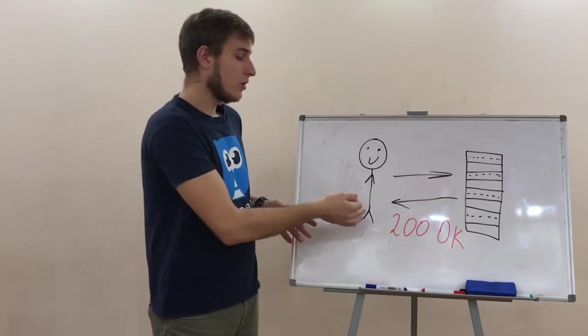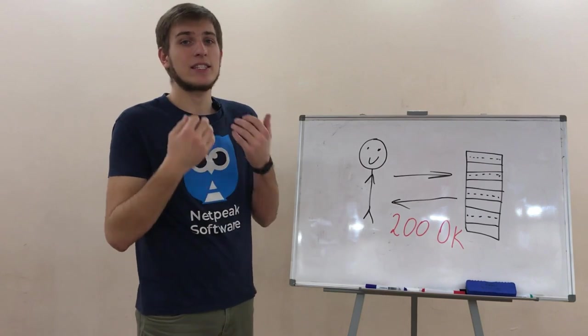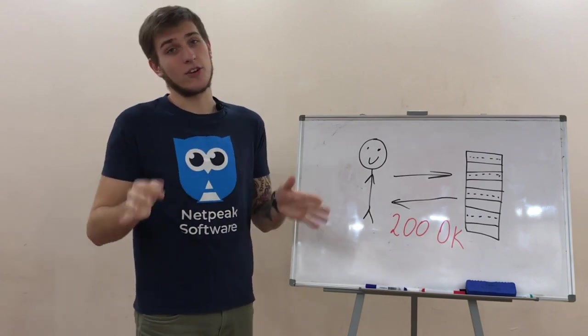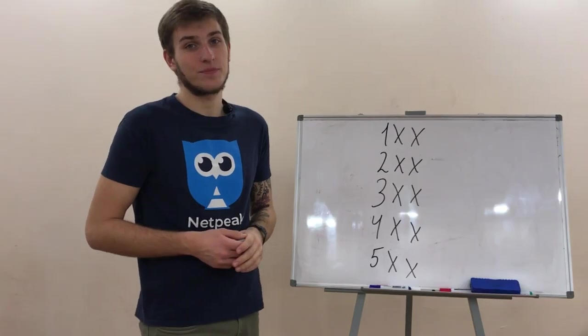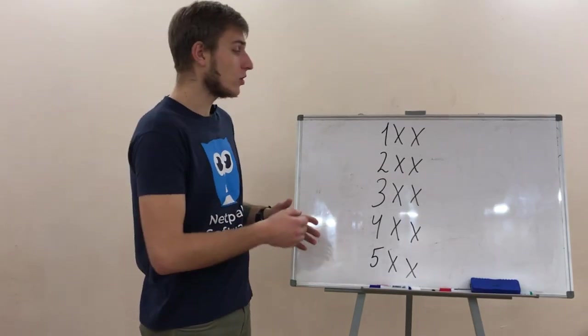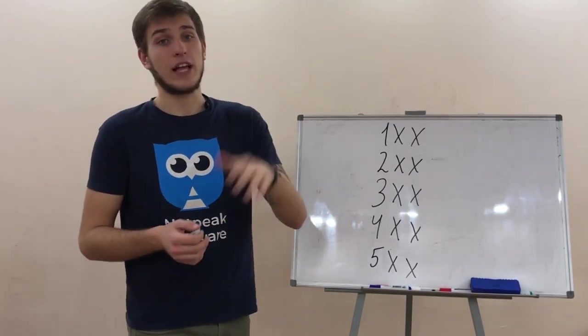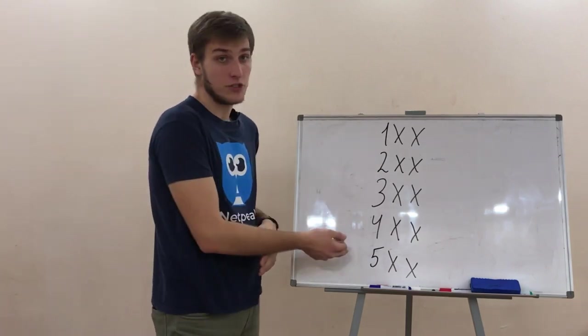an understanding of server's reaction on a query to a specified URL. For example, 200 OK status code gives us a clear understanding - everything is OK, you're at the right place. As I mentioned before, all codes are divided into 5 classes and differ by the first digit.